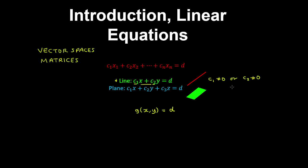You may recognize this line in the explicit form if we divide through by c2 and subtract c1x from both sides. So what we get is minus c1 over c2, multiplied by x, plus d over c2.